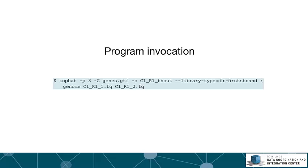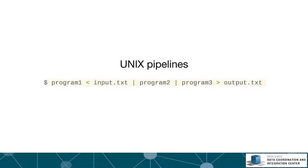The argument -p8 means we're asking it to start up eight threads, so it's a multi-threaded application. We specify that the input files include genes.gtf and define output file names in a particular format. In the Unix system, there's a special pipe operator, which is the vertical line character. It takes the output of the program on the left and feeds it into the input stream of the program on the right. So program one reads input.txt, generates output sent to program two, whose output goes to program three, which writes to output.txt.